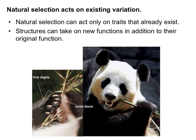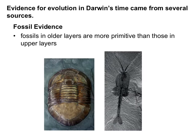An important point is that just because a trait would be beneficial doesn't mean it will just show up — these traits have to already exist in the gene pool. While it might be really beneficial to breathe underwater, if we don't have that trait in our gene pool, humans aren't just going to be able to breathe underwater because we want to. However, structures can take on new functions in addition to their original function. An example is the panda, which doesn't have opposable thumbs, but has an evolved wrist bone that acts like a thumb, allowing it to grip bamboo and eat it.